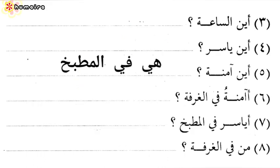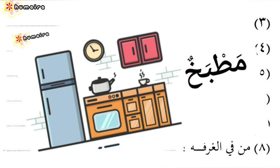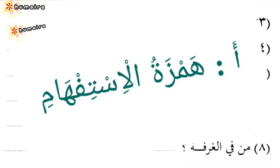Number 5: أين آمينة? Where is Aminah? Is Aminah in the room? This Hamza at the beginning — آ — is a harf al-istifham. It is a particle of interrogation. When it appears at the beginning of a sentence, it makes the sentence a question.